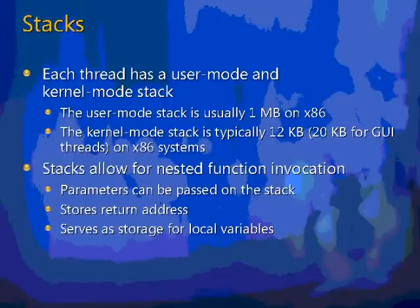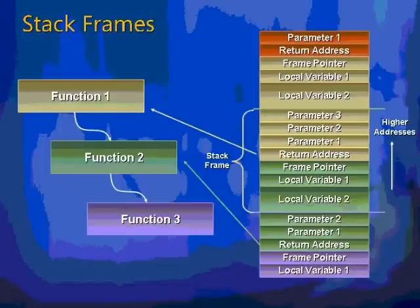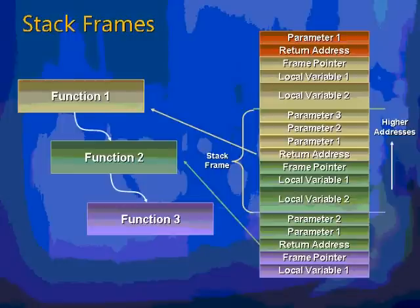Stacks allow for nested function execution, where a developer divides code into subroutines. When one function calls another, a stack frame is created. A parameter is passed to the called function by placing it on the stack, and the return address is recorded so execution can come back after the function completes. The function also uses that temporary storage to set up a frame pointer and store local variables, which are released off the stack when the function returns. If that function calls another, you get another stack frame, and this can continue indefinitely.